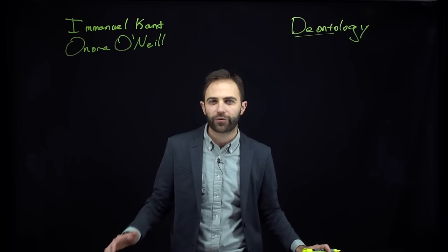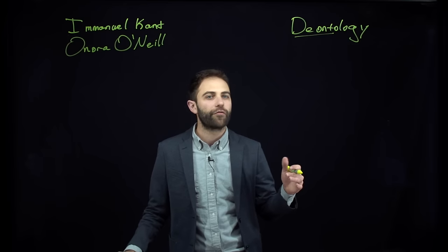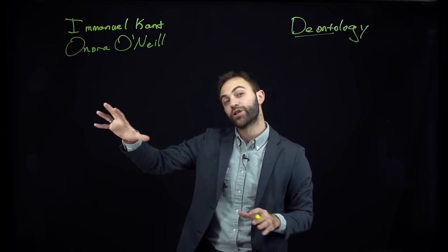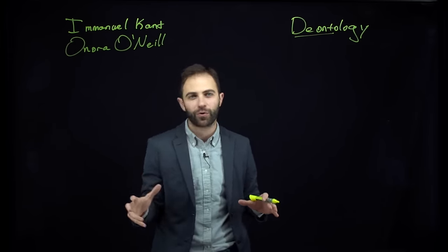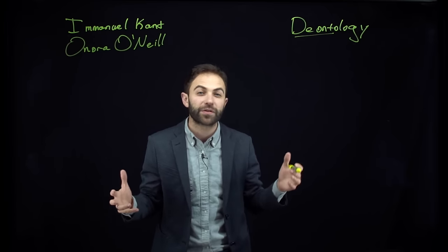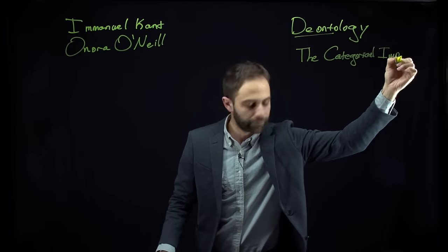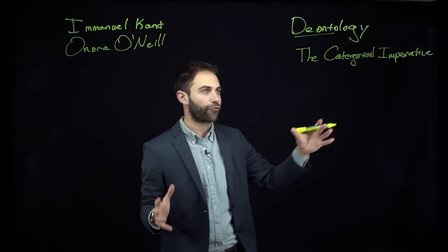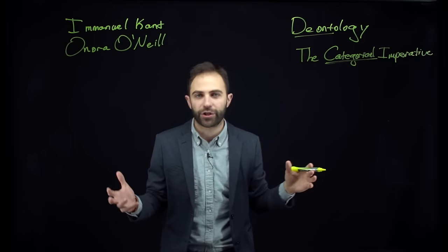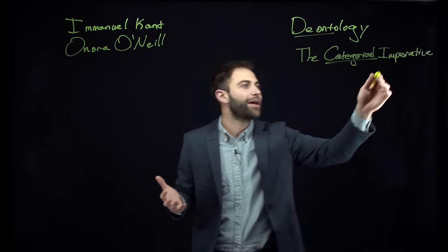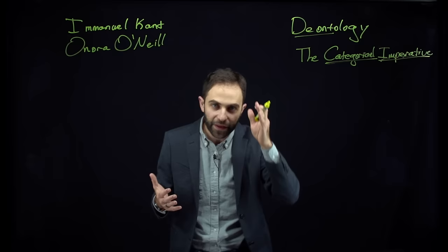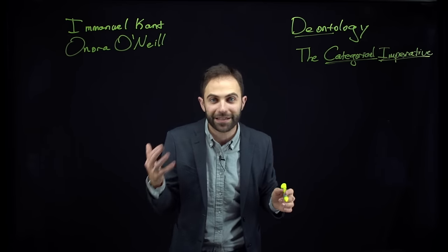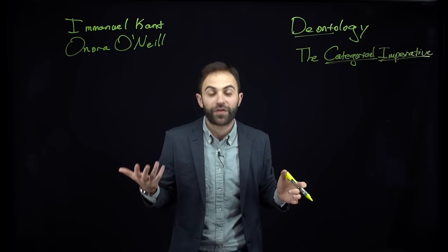What we got from O'Neill in the reading for today was a presentation of Kant's central moral principle. Just like with utilitarianism there was the principle of utility, so too in Kant's moral theory there is a famous principle that he calls the categorical imperative. Categorical just means unconditional — it's something that applies all the time — and imperative just means a command, or something that you must do. So the idea is that this is a principle of morality that applies to everyone, everywhere, and says what they should or shouldn't do.